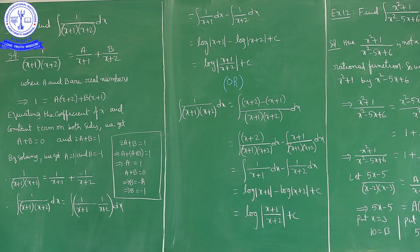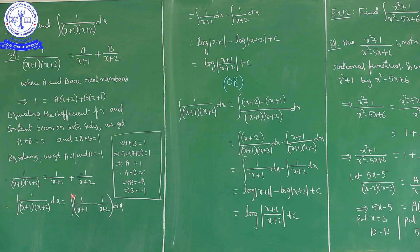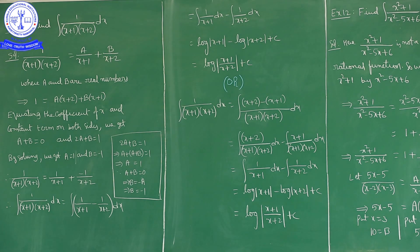Substituting A = 1 and B = −1, the integral ∫1/[(x+1)(x+2)] dx = ∫[1/(x+1) − 1/(x+2)] dx = ∫1/(x+1) dx − ∫1/(x+2) dx = log|x+1| − log|x+2| + C = log|(x+1)/(x+2)| + C.